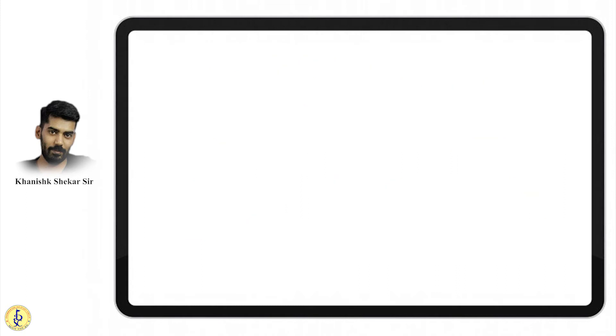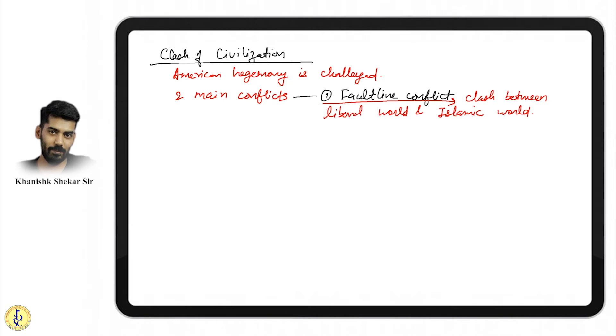He says wrong policies are to be blamed. Otherwise there wasn't an issue, but these people followed wrong policies. Let's see the Clash of Civilizations. American hegemony is challenged. Throughout there have been clashes. He mentions many civilizations but says there are two main conflicts happening right now: fault line conflict and historic conflict.